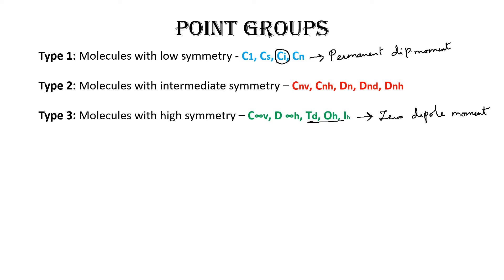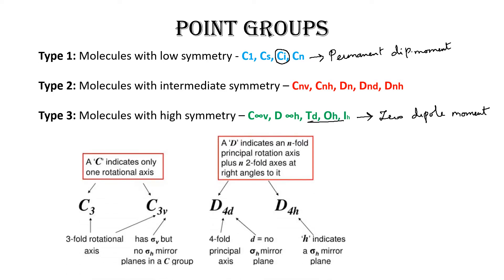Now I will explain some basic points: what is C, what is D, what is V, D, and H. C represents axial rotation — wherever you are doing axial rotation, we indicate the letter C. For D, it is not only axial rotation but also the principal axial rotation plus C2 axes at right angles, which we indicate as D.